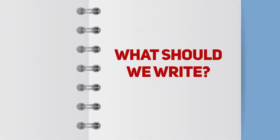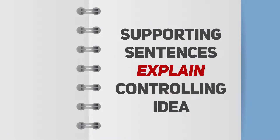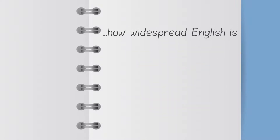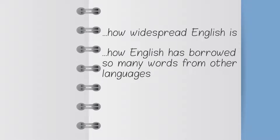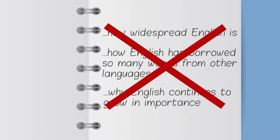So what should we write? Supporting sentences have to explain our controlling idea, which is that it's easy to learn by following these simple tips. We couldn't talk about how widespread English is, how English has borrowed so many words from other languages, or why English continues to grow in importance. Sure, those facts are true, but we didn't mention them in our topic sentence. So this is our focus.